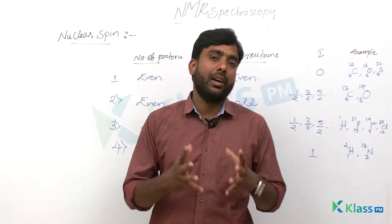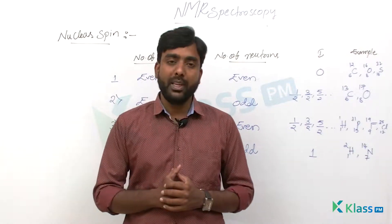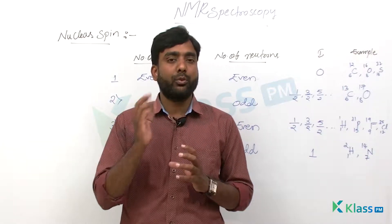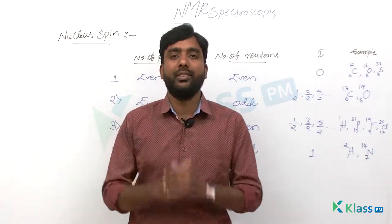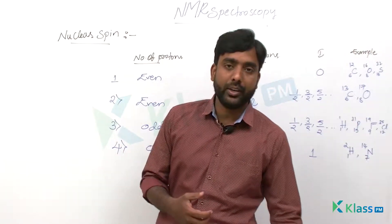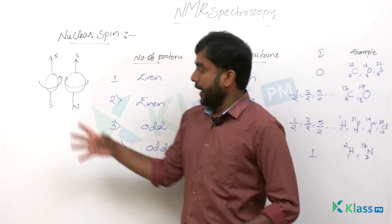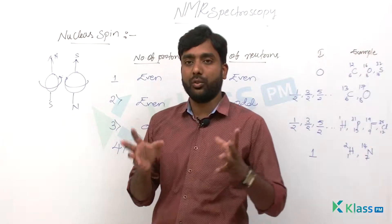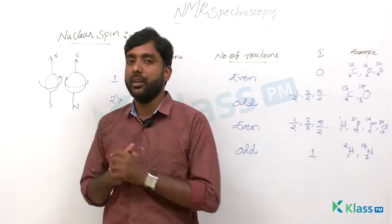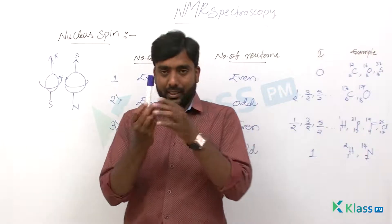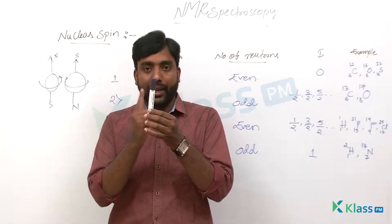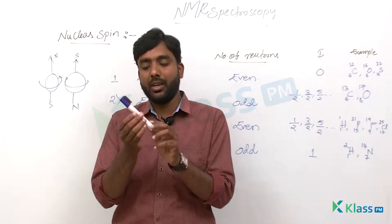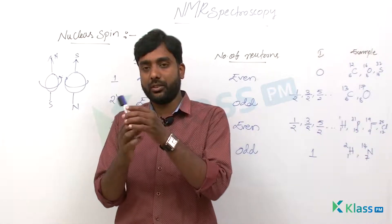We know that like electrons, the nucleus will also have spin — clockwise spin and anticlockwise spin. Based on which kind of spin it has, it has a north and south pole, and the nucleus acts like a tiny magnet. A nucleus can have clockwise or anticlockwise spin, and their orientations are also different. The nucleus rotating on its own axis is spin, and the nucleus rotating in different directions is orientation.